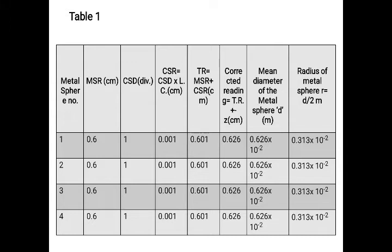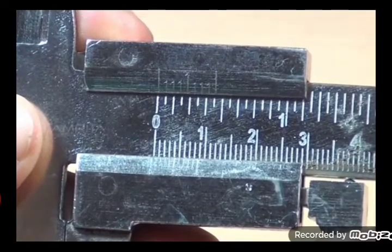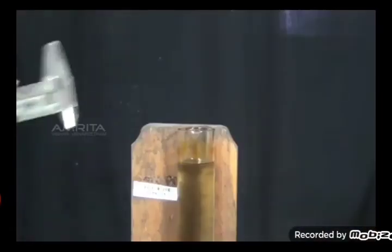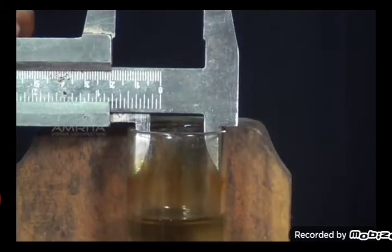Note down the readings in Table Number 1: Metal sphere 1, 2, 3, 4 whose MSR, CSD, CSR reading, total reading, corrected reading, mean diameter, and radius of the metal sphere r is shown in this table. Find out the least count of the vernier caliper and find out the inner diameter of the cylindrical jar.